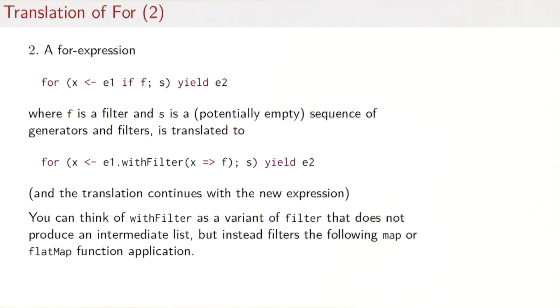Now that we've looked at for expressions consisting only of a single generator, let's look at more complicated ones. The first for expressions that we are going to look at would have a generator x taken from e1 followed by a filter f and that in turn could be followed by further generators or filters which are here subsumed by s. That for expression can be rewritten to another for expression that contains a generator and the filter has been absorbed into the generator. So the generator now reads x taken from e1 withFilter the anonymous function that takes an x and gives us back the expression f.